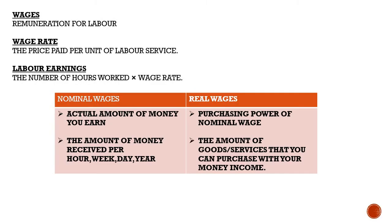Wages refers to the remuneration for labor. Remember, labor is a factor of production. The wage rate refers to the price paid per unit of labor service, and your labor earnings is the number of hours worked multiplied by your wage rate.